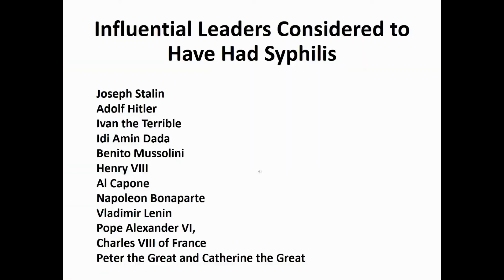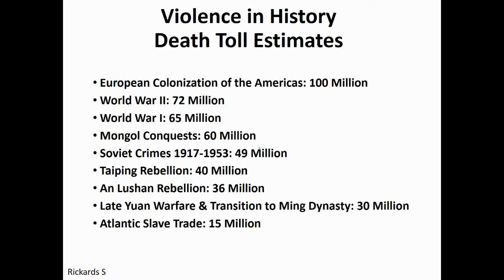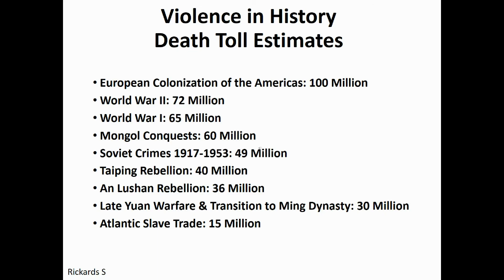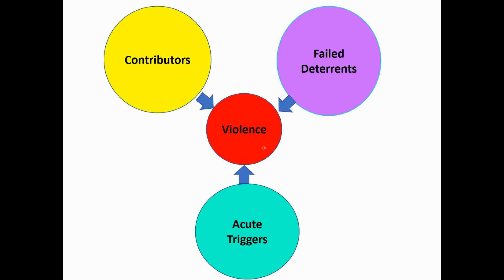Syphilis may have contributed to the behavior of notorious historical leaders. To what extent have infections contributed to violence in human history? Violence occurs when there's an imbalance of multiple contributors and deterrents. Some contributors are acute triggers. The epidemiology, immunology, psychoimmunology, neurochemistry, and neurocircuitry of violence are reviewed.